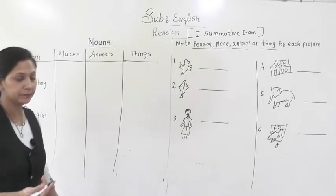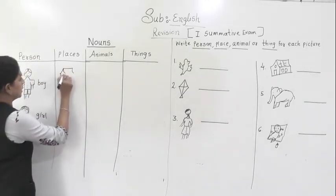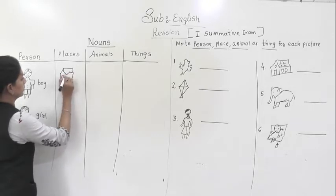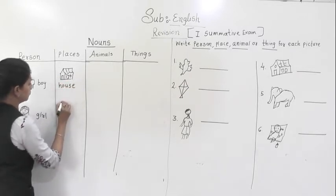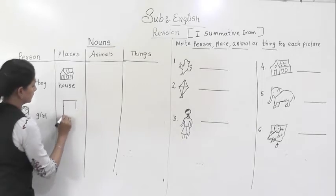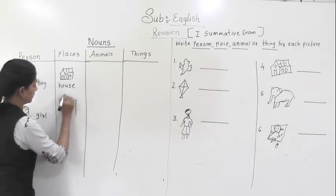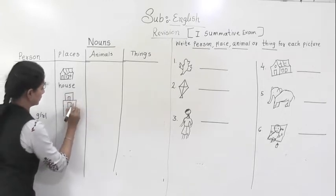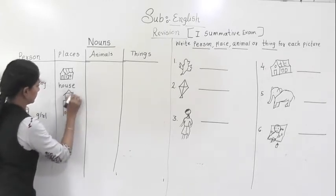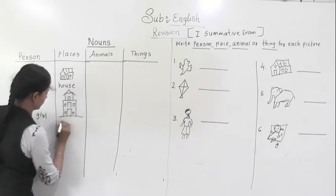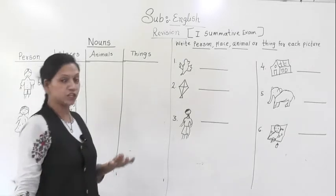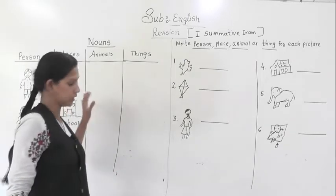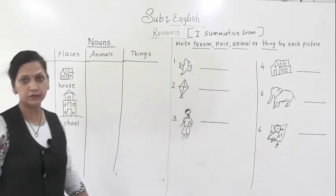What about places? So, places are house, then school, hotel, station, bus stand. These all will come in places. Garden, zoo, etc.